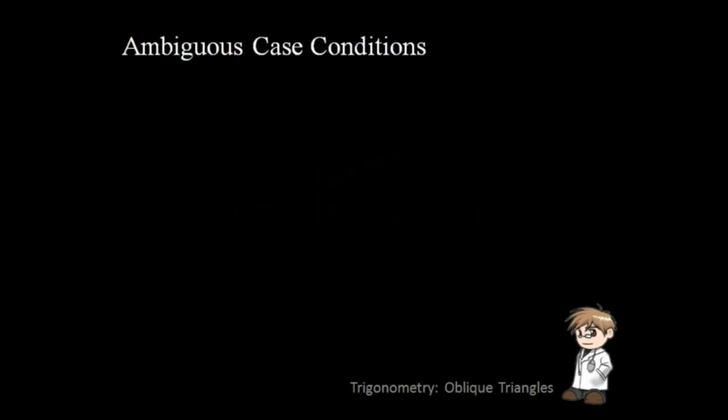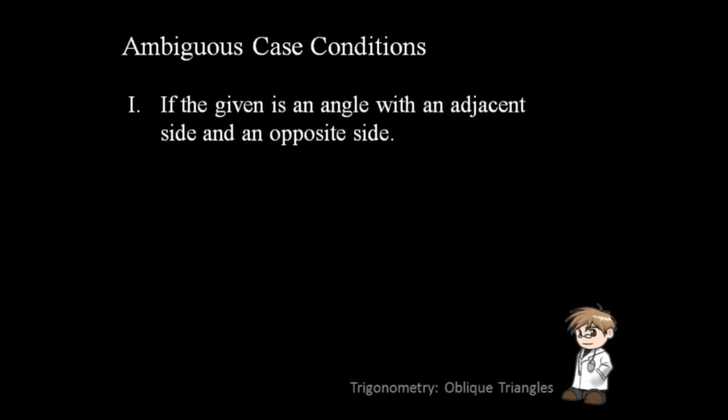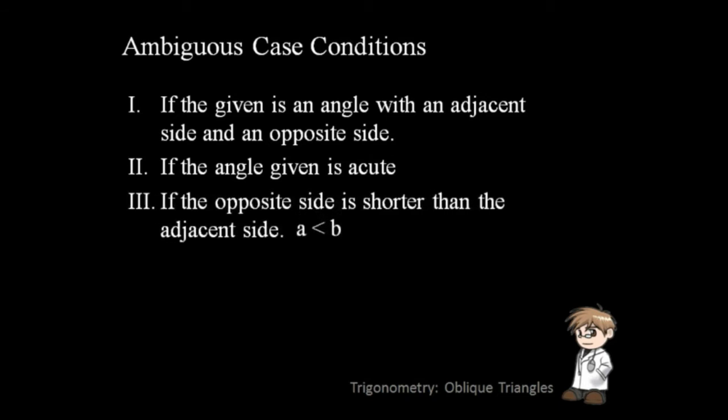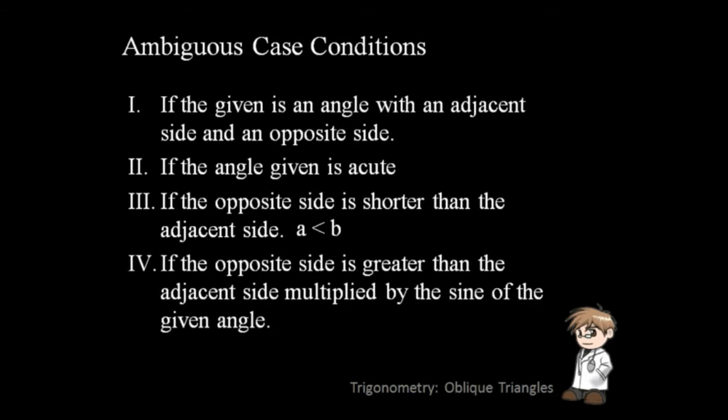How to determine if the given is an ambiguous case? There are four conditions. First, if the given is an angle with an adjacent side and an opposite side. Second, if the angle given is acute. Third, if the opposite side is shorter than the adjacent side. And fourth, if the opposite side is greater than the adjacent side multiplied by the sine of the given angle.